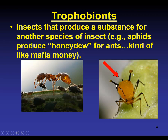Looking at the back end of the aphid, you'll see two structures called cornicles — little exhaust pipes coming out the back of the abdomen. Those do not produce the honeydew, but they produce other liquids that include allomones. Those allomones, as we discussed last chapter, are secreted to get rid of predators. Under stress, they'll squirt these liquids out — they probably function as an alarm chemical to tell other aphids a predator is coming.